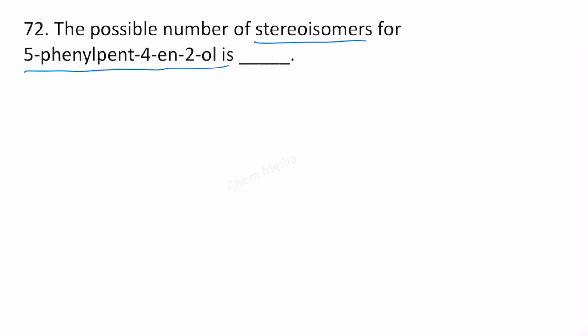The root word is 'pent', meaning the parent chain contains 5 carbon atoms: 1, 2, 3, 4, 5. At position 2 we have an alcohol functional group, at position 4 we have a carbon-carbon double bond, and at position 5 we have a phenyl substituent.